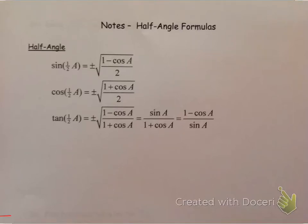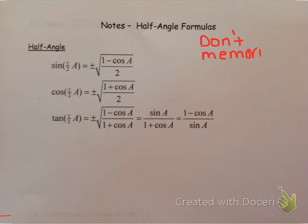This is the last set of identities for the year, and remember that you don't have to memorize these. We will be providing them for you on the test. These are the ugliest identities to use and we'll have the least practice with them, so you're also not going to have very many of these on the test. We're only going to cover three types, but before we can do those types we need to discuss some differences in these identities.